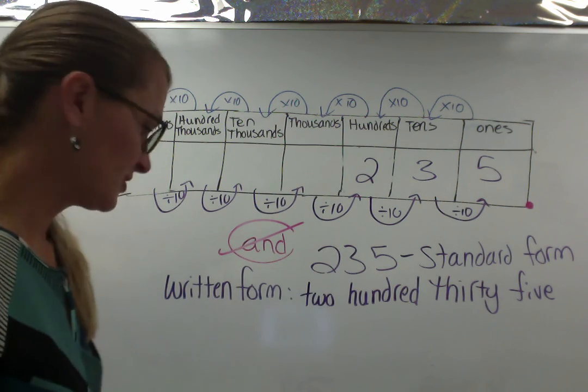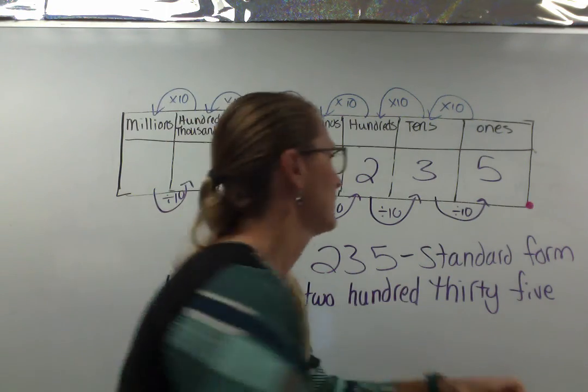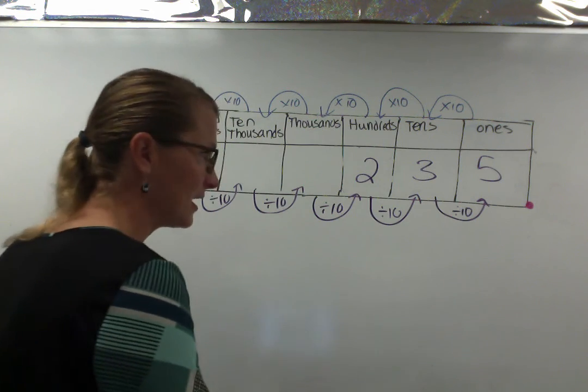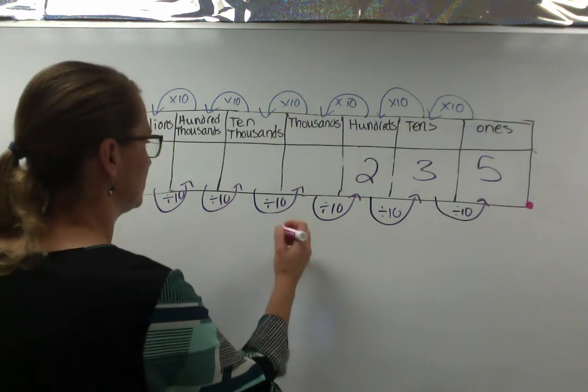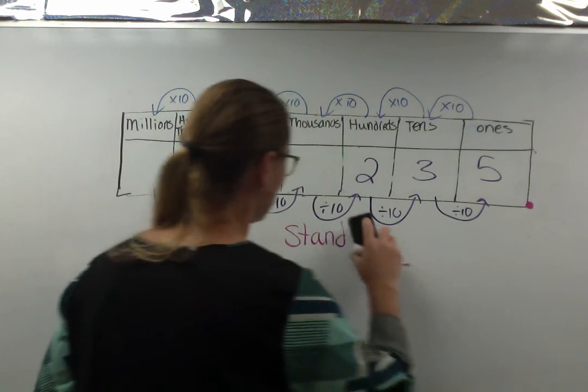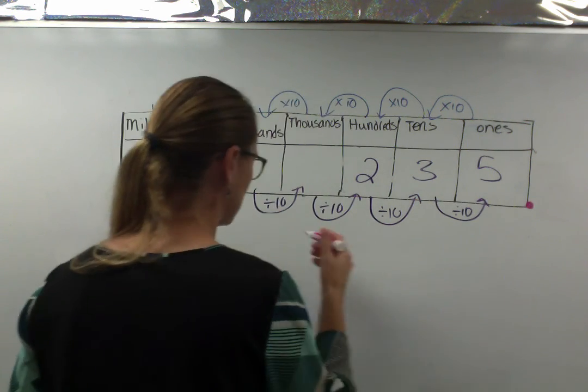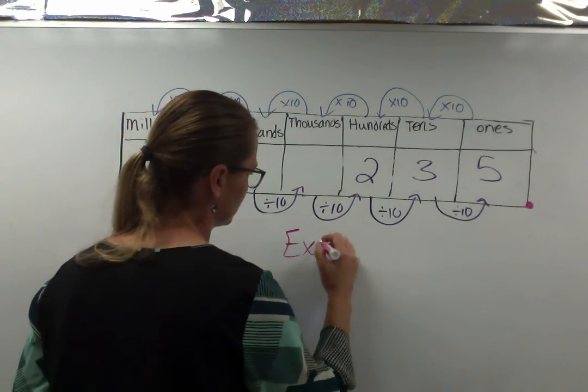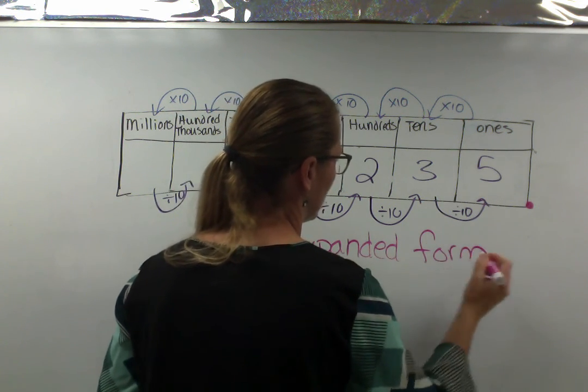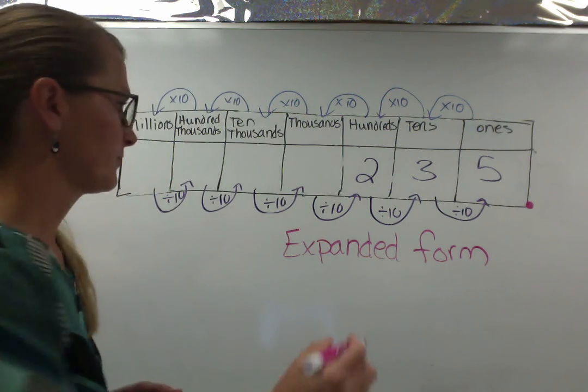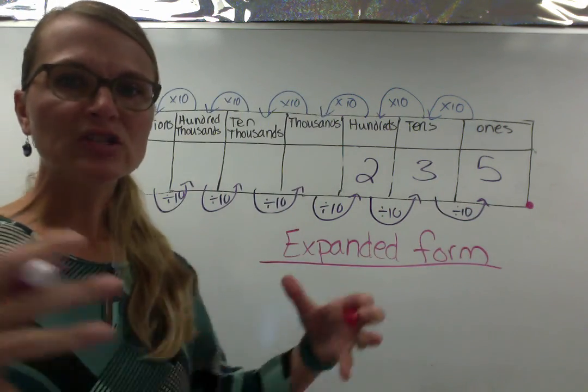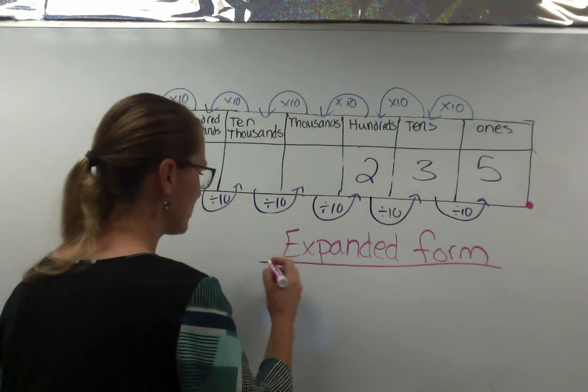And the last form is what we call the expanded form. And this one can be a little bit trickier, but I think you've done it before. But in fifth grade, we're going to kick it up a notch. So expanded form is when we take that number and we stretch it out and we write the value of each digit.